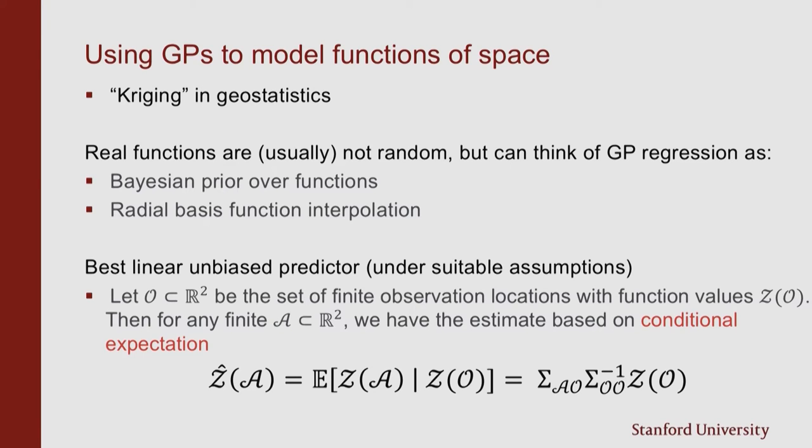You can do prediction with this. There's some simple formulas to say what you think the field should be at some locations where you don't know the data given what you know about the field at these observed locations o. And these are going to involve some sort of linear algebra with this kernel matrix sigma. This is our covariance matrix. Its entries are given by our covariance kernel.